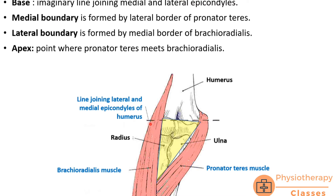As cubital fossa is a triangular intermuscular space, it will have a base and, opposite to that, an apex, with two other sides of the triangle. In this picture, three bones can be seen — humerus, radius, and ulna. As radius is laterally placed in the forearm, this is the lateral aspect and this is the medial side. Two muscles can be seen: pronator teres on the medial side and brachioradialis on the lateral side. The name brachioradialis itself indicates it is placed on the lateral side.